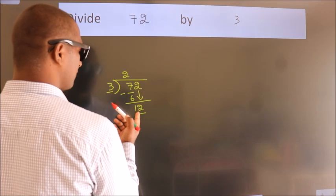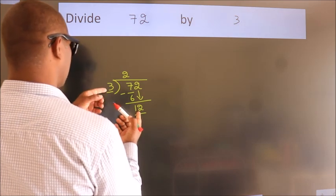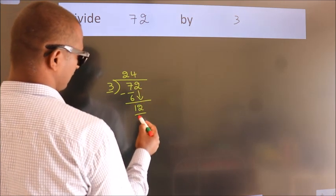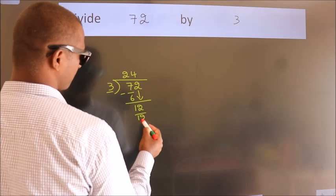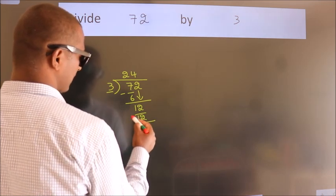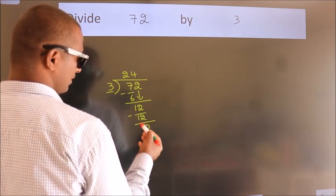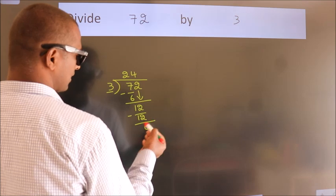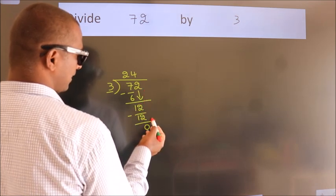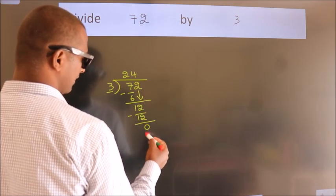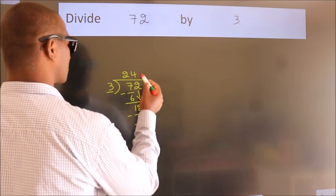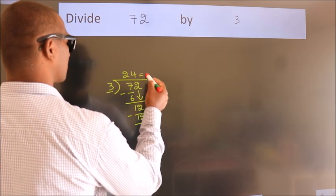When do we get 12 in the 3 times table? 3 4's 12. Now we subtract — we get 0. After this, no more numbers to bring down, and we got remainder 0. So this is our quotient.